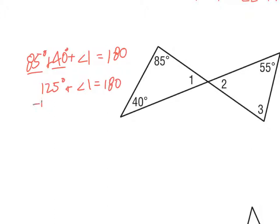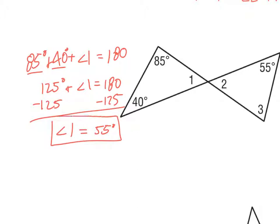Subtracting 125 from both sides gives angle 1 equals 55 degrees. Now I know that angle 1 and angle 2 are vertical angles, so they are congruent. Therefore angle 2 is also equal to 55 degrees.